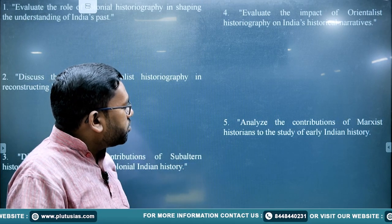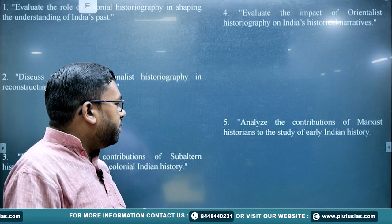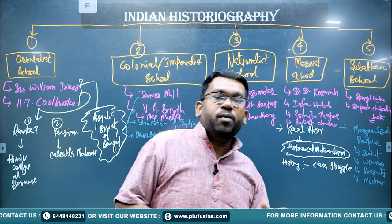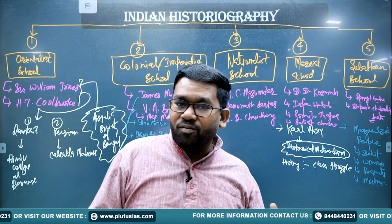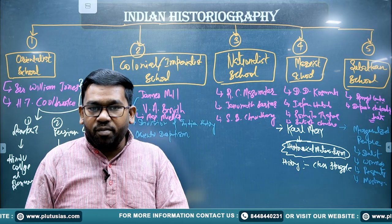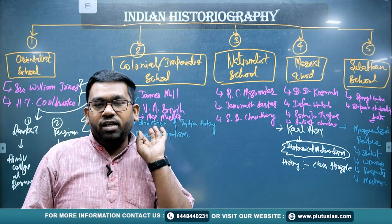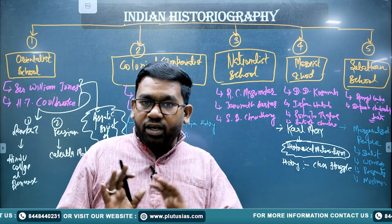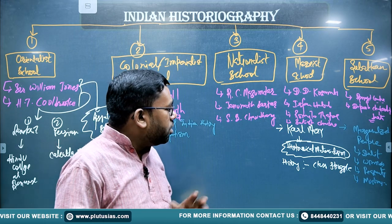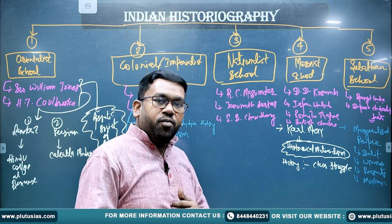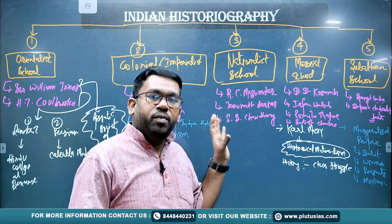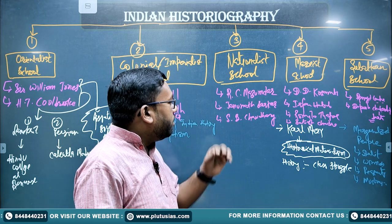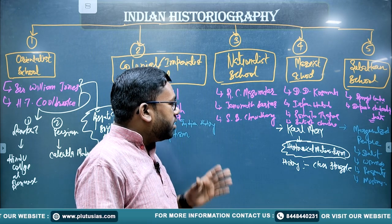Question five: 'Analyze the contributions of Marxist historians to the study of early Indian history.' The most important name in the Marxist school is D.D. Kosambi, who had debates on the Mauryan Empire and Indian feudalism. Irfan Habib is a very important historian who writes about the Indus Valley civilization and the Iron Age — primarily a medieval historian, but he writes about ancient India too. Romila Thapar and Satish Chandra are other major historians that can be mentioned here.